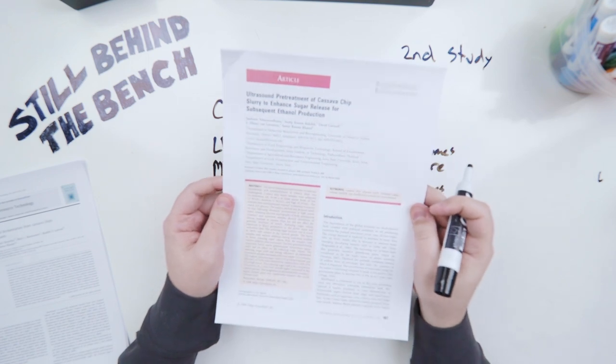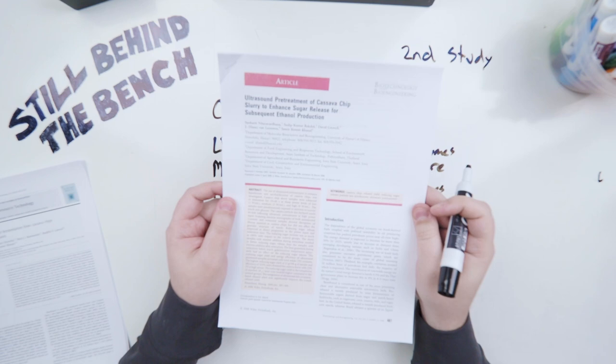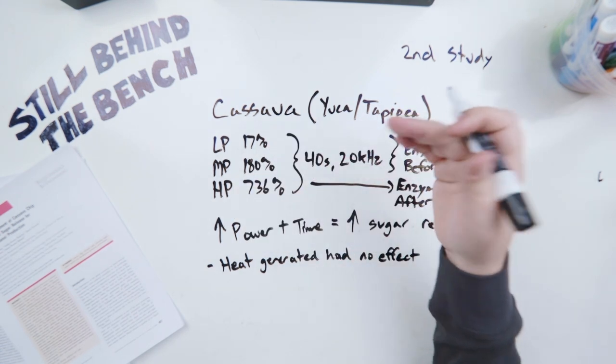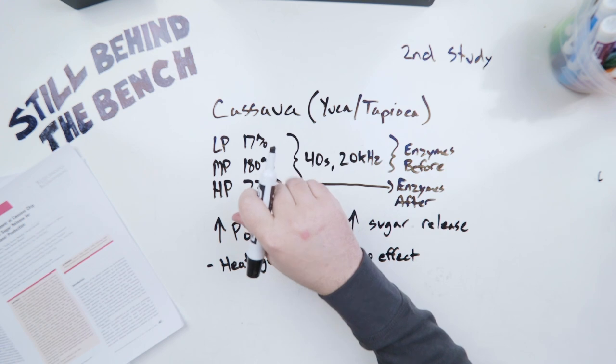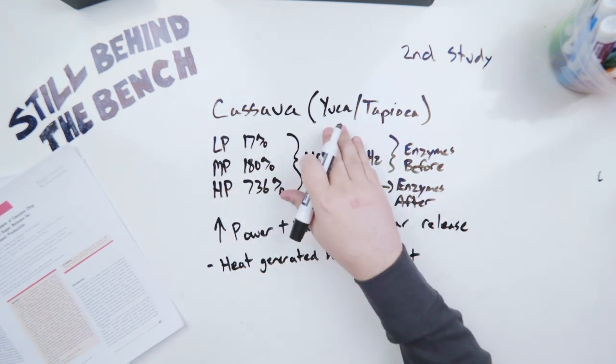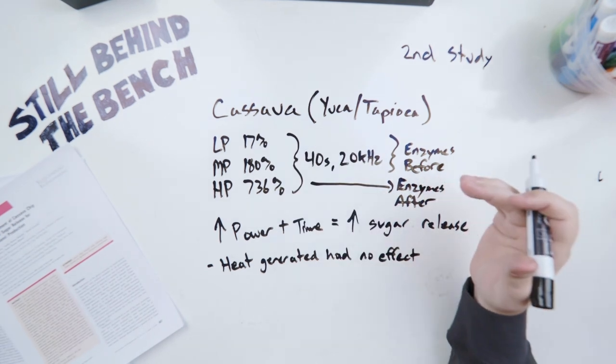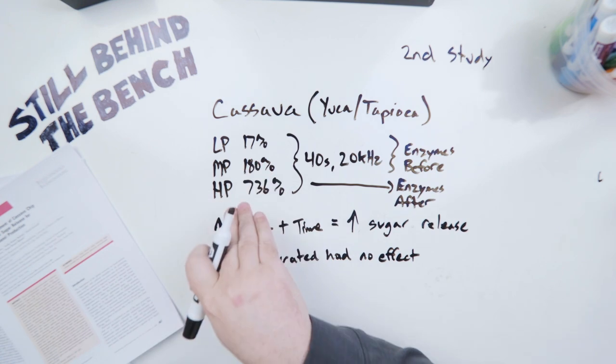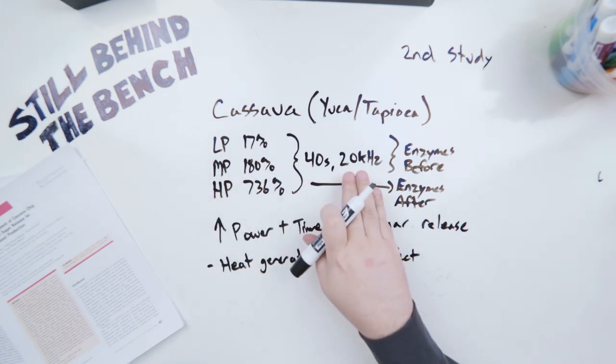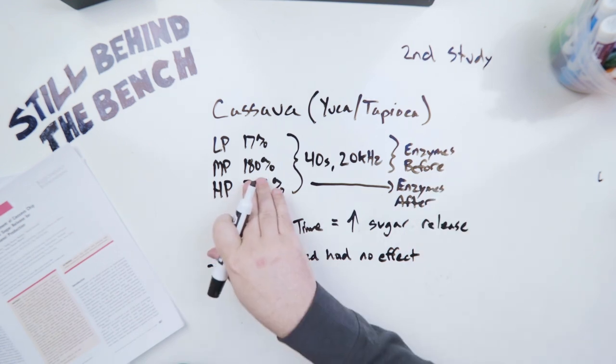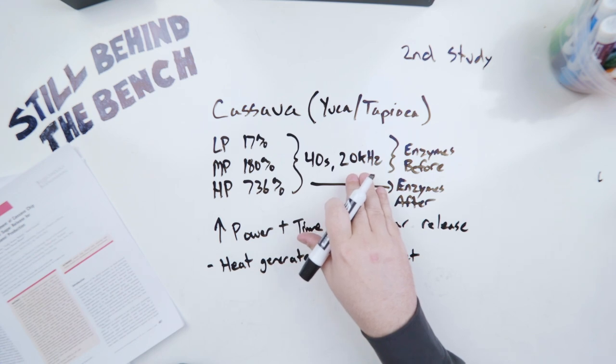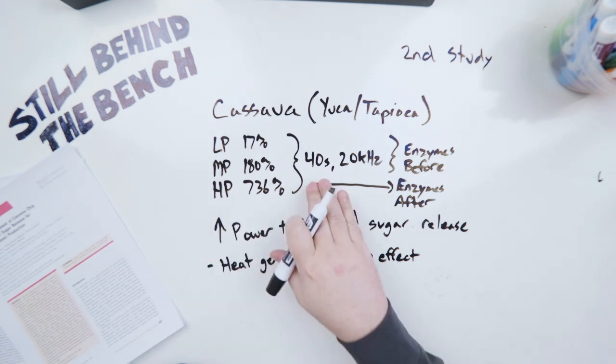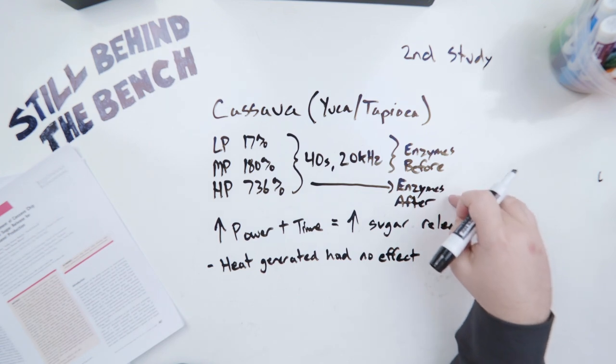The second study is called ultrasound pre-treatment of cassava chip slurry to enhance sugar release for subsequent ethanol production. I've summarized this one down even more. They used cassava. Cassava is essentially yucca or tapioca. Different names for it based on where it's pulled out of the ground. Again they did all kinds of testing but to break it down at low power they had a 17% increase in the sugars release at 40 seconds and 20 kilohertz with the enzymes added in before sonication. At medium power they had 180% increase at 40 seconds and 20 kilohertz enzymes added before.